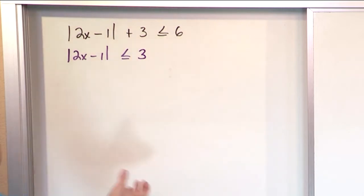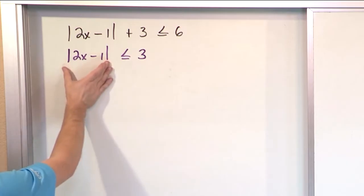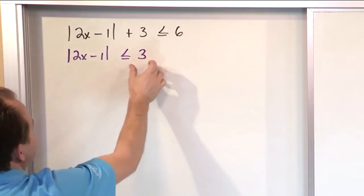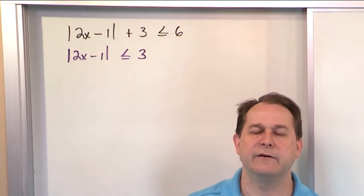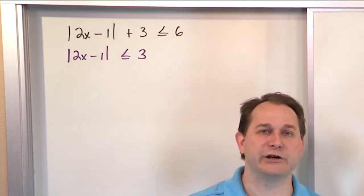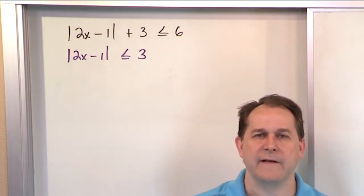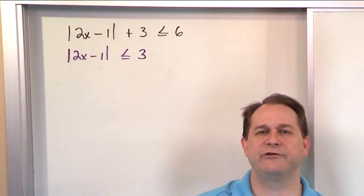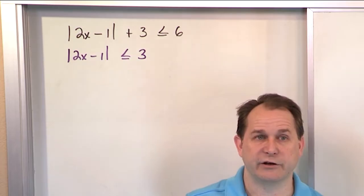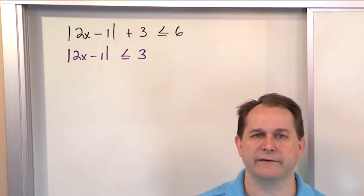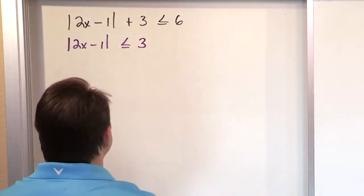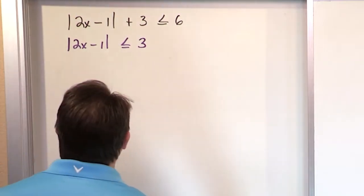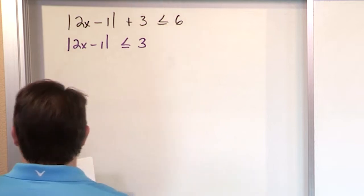The next thing you ask yourself is: now I have a problem that looks like the ones we've done in the last section — some absolute value of an expression less than or equal to a number. When you see absolute value less than a number, you need to think that's an 'and.' That's a line segment shaded region on the number line. So let's write it as such.